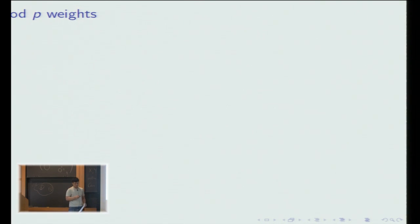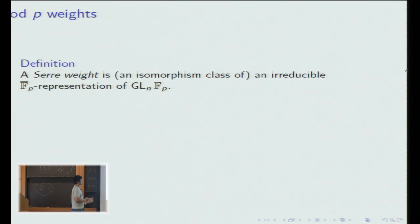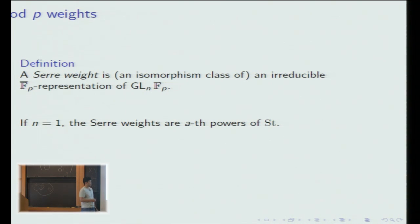To answer this question, it's convenient to have a notion of a weight mod p. Recall that λ is just some multi-set of integers, which is equivalent to an irreducible representation of GL_n by highest weight theory. A Serre weight is just an isomorphism class of an irreducible mod p representation of GL_n(F_p). I'll forget the fact that it's an isomorphism class for the rest of this talk. If n equals 1, then the Serre weights are just powers of the standard representation. Note that the a-th power of the standard representation is the same as the b-th power if and only if a and b are the same mod p-1.